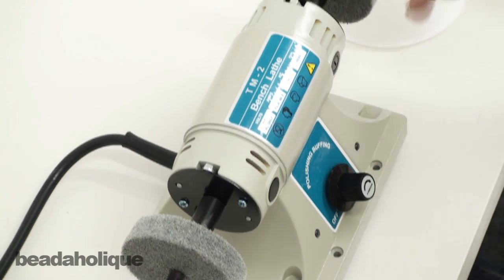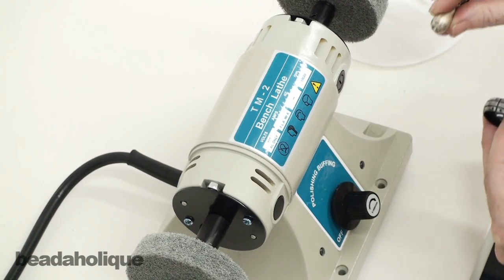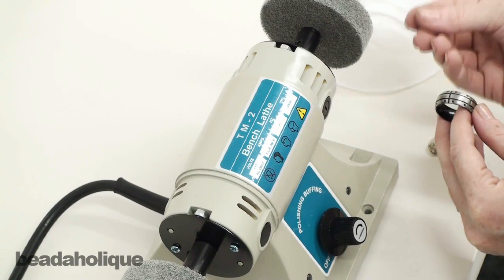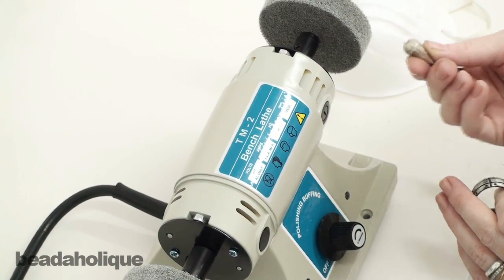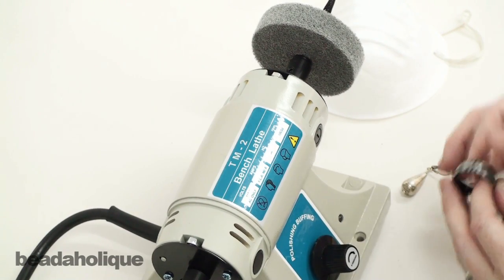We're going to point our piece downward. I've got another earring over here that I'm going to use as an example. We're going to be pointing our piece downward, and we're going to make sure we don't touch the wheel. I do recommend using some type of finger protection as well, because this is going to heat up as you're doing this, so you want to be really careful with that.